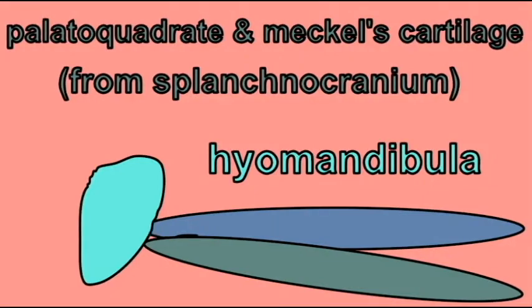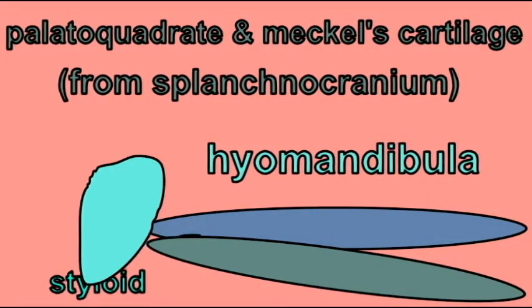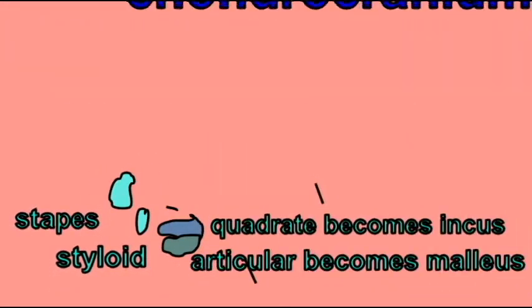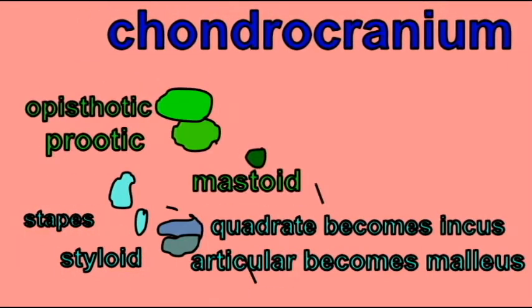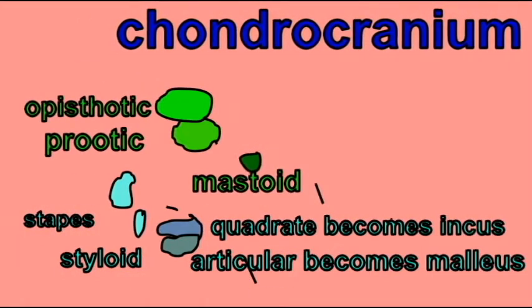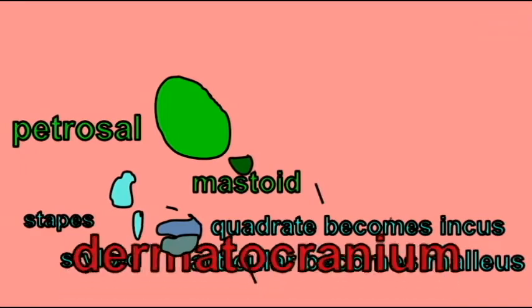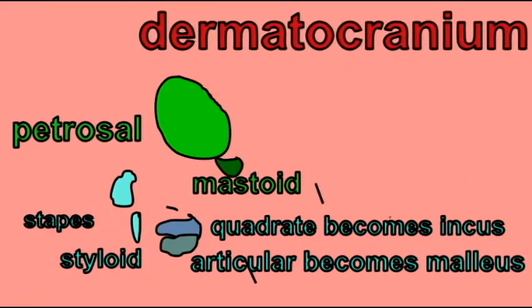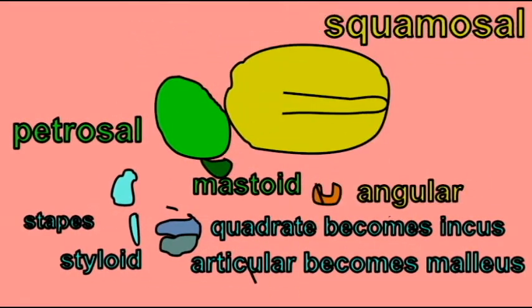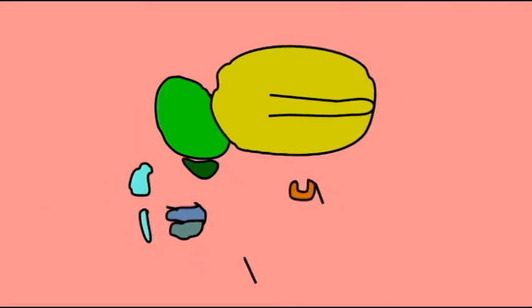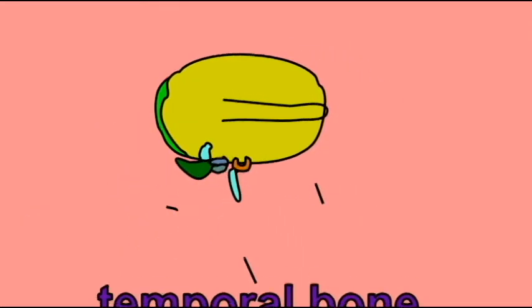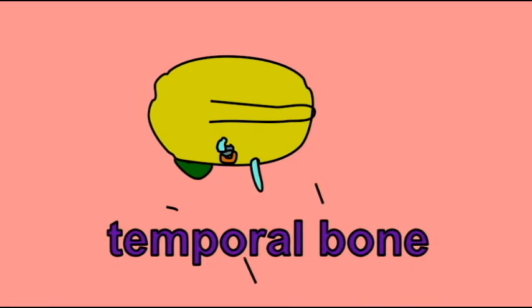The chondrocranium contributes the petrosal bone, which comes from two separate otic regions and a mastoid process. The dermatocranium contributes the squamosal bone and the angular bone from the jaw, which goes to the middle ear. All of these together combine to make the one single temporal bone in humans.